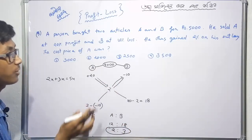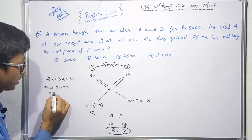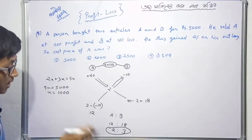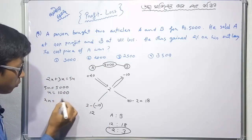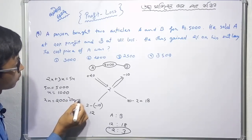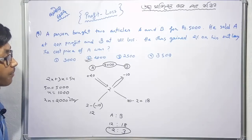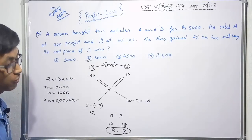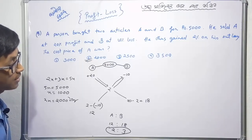The cost price ratio is 4X to 9X, giving us 4X plus 9X equals 13X. Since the total is Rs. 5000, 13X equals 5000. Solving for X and then finding the cost price of A, we get the answer from the options.